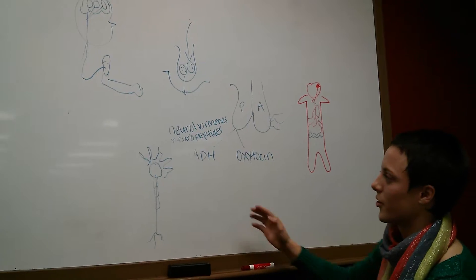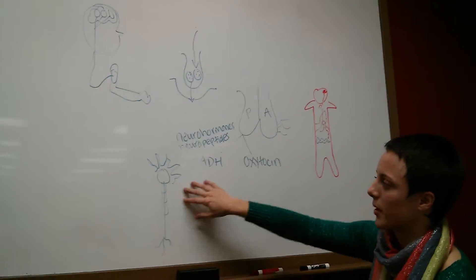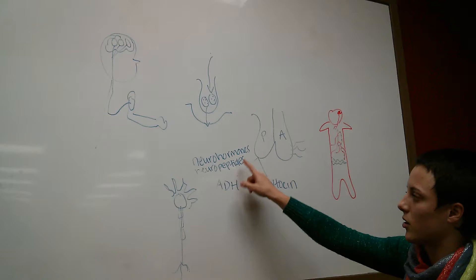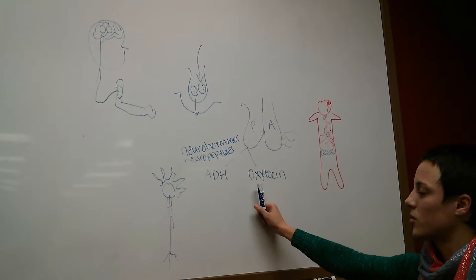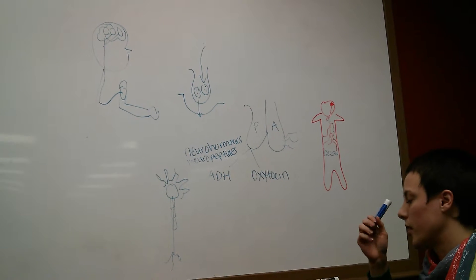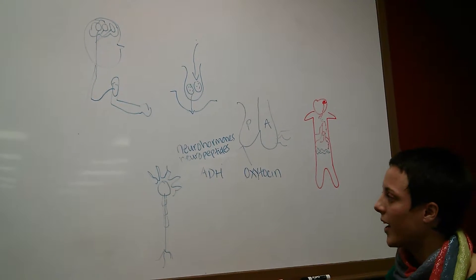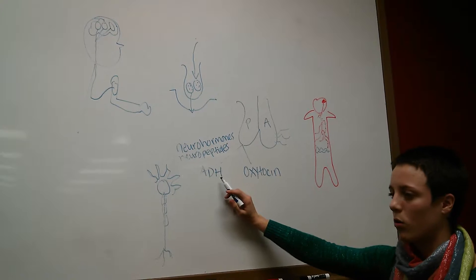So, it's just neuron, or neuro, because it's still being secreted by the neuron, but it's just traveling through the bloodstream. So, these are called neurohormones. So, ADH and oxytocin are the two neurohormones produced by the posterior portion of the pituitary gland. ADH stands for anti-diuretic hormone.